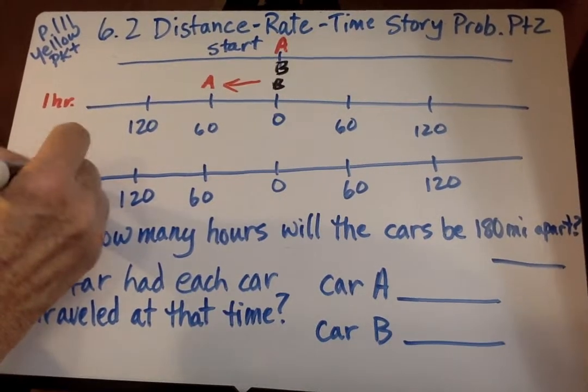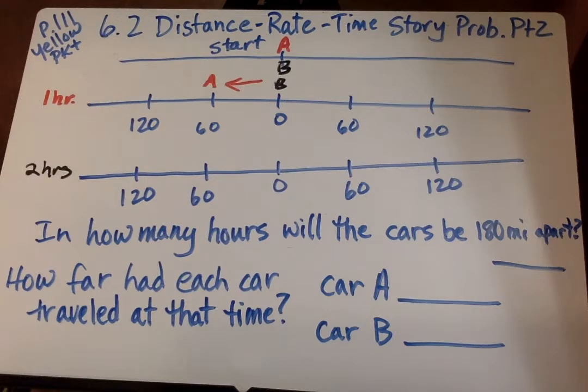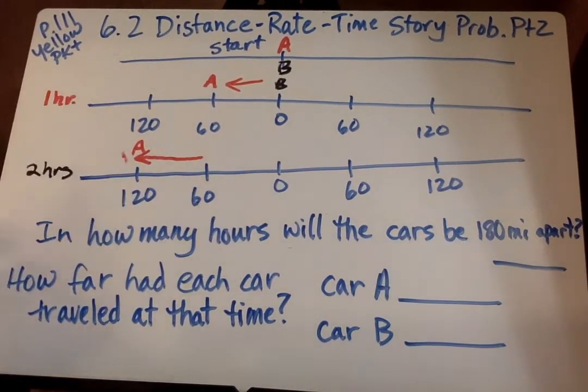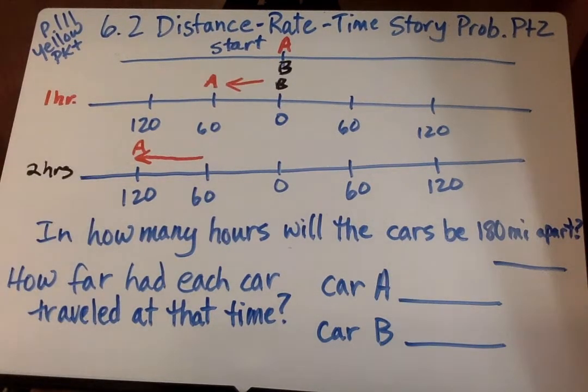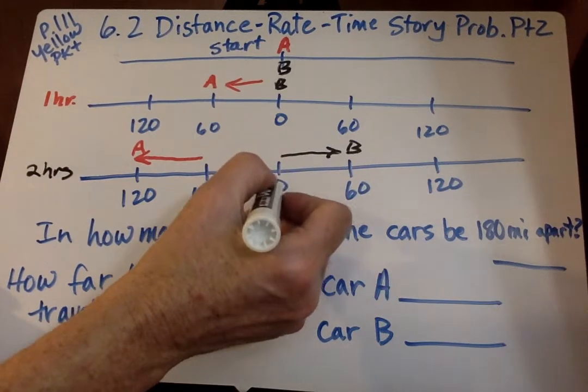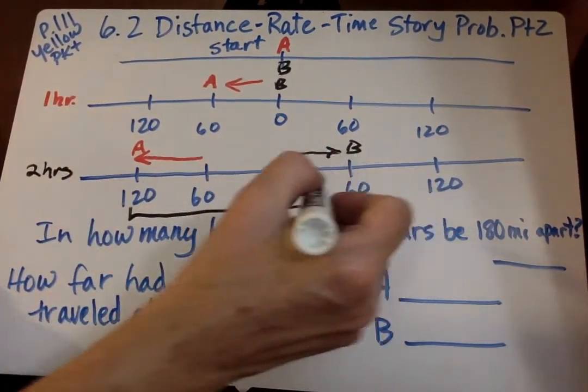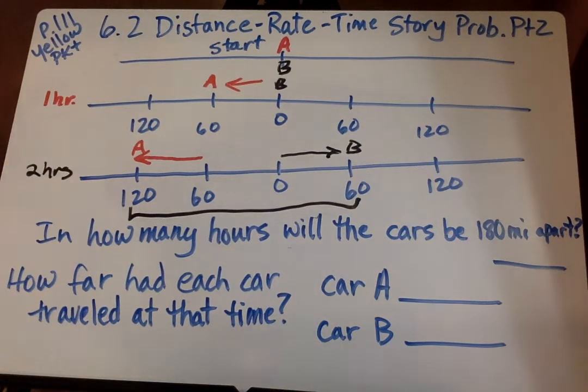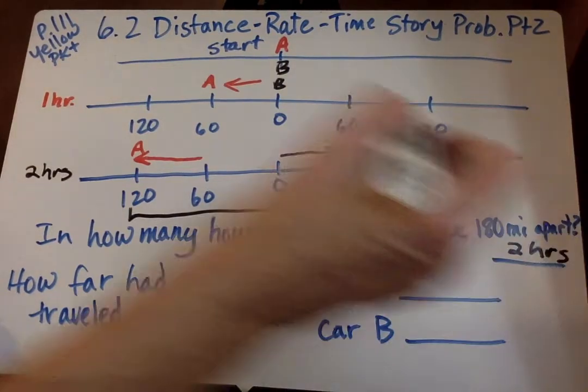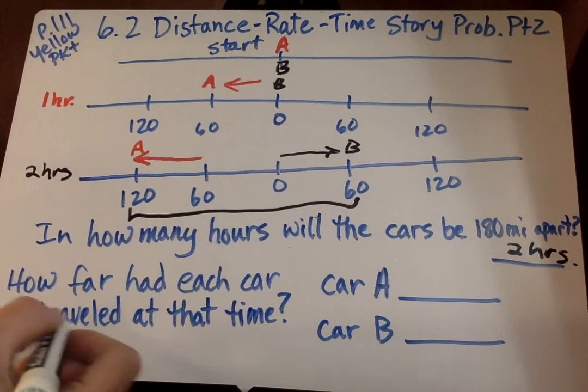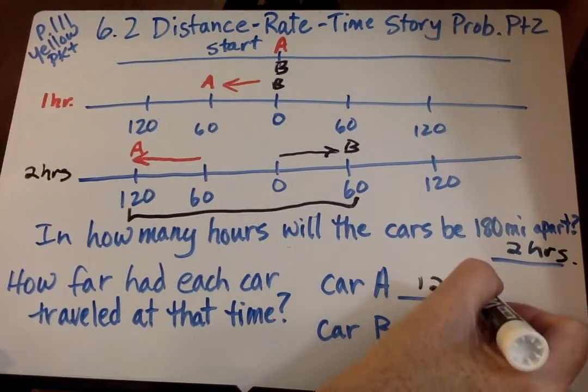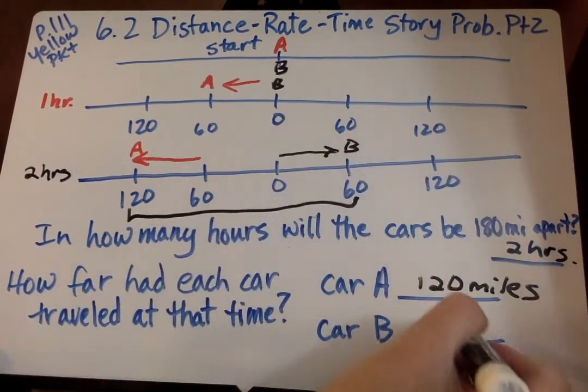Now after two hours, we see that car A goes 60 more miles and is 120 miles from the beginning. So here's car A. Now car B finally gets moving along. We'll say someone had a family issue, but they finally get going after an hour and they go this direction. So B is here. Now here's the original spot. We go 120 plus 60. That's going to be 180 miles apart. So it's going to be after two hours. Because it says in how many hours will the cars be 180 miles apart. And the answer there is two hours. How far had each car traveled at that time? So car A traveled 120 miles.